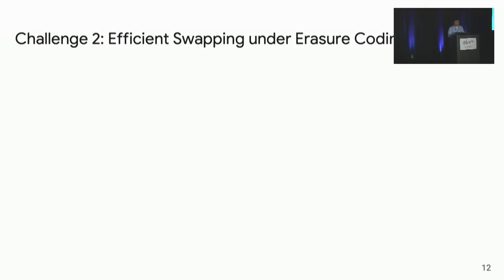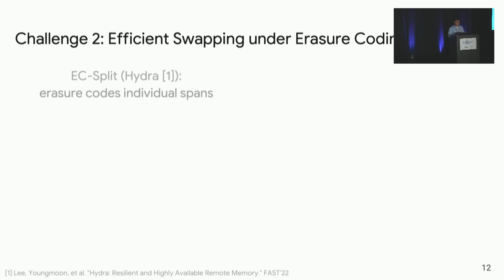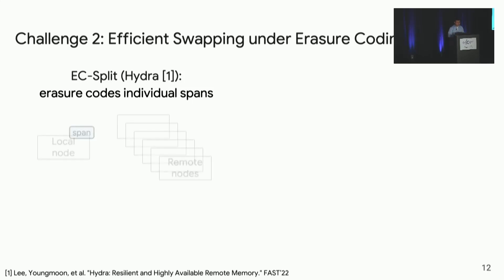Another challenge of applying erasure coding to a far memory system is achieving efficient swapping. A natural way to apply erasure coding, as suggested in the Hydro paper, is based on 4-kilobyte OS pages. In our span context, we call it EC Split — it basically splits each span into four data chunks, generates two parity chunks, and writes these six chunks to remote nodes.